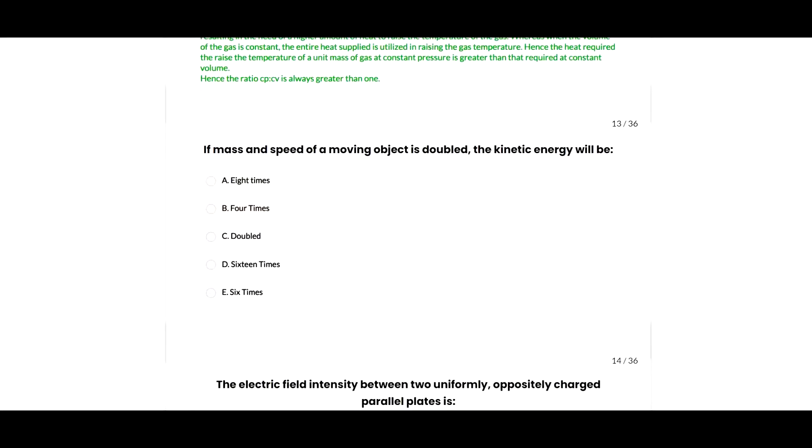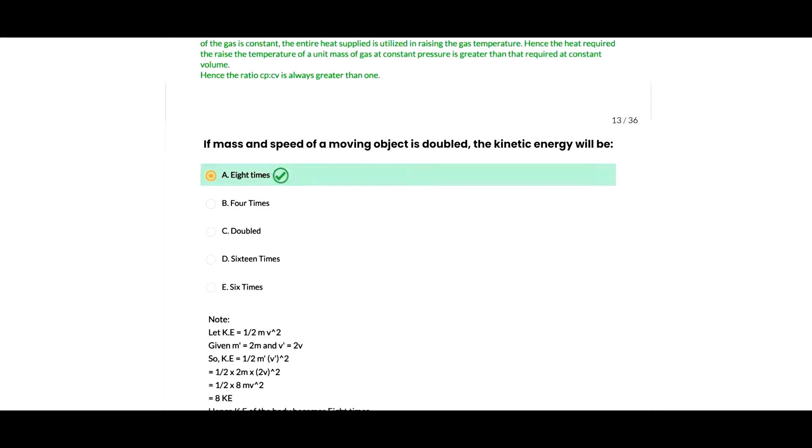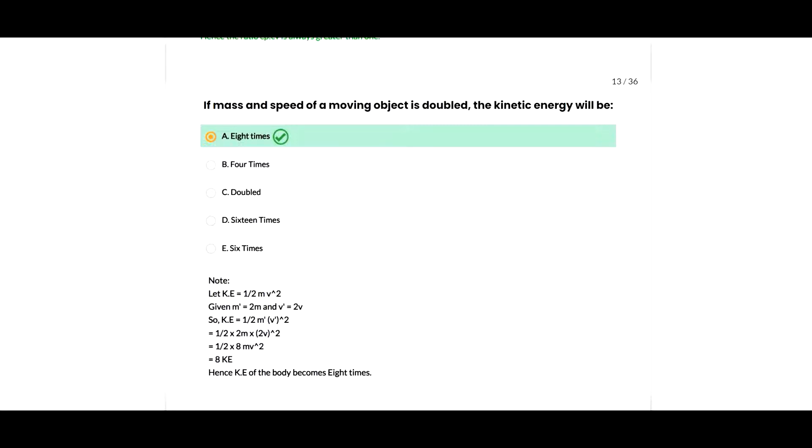Next question: if mass and speed of a moving object are doubled, the kinetic energy will be eight times. KE equals half MV squared. If M dash equals 2M and V dash equals 2V, then KE dash equals half times 2M times (2V) squared, which gives us 8KE, so A option is correct.